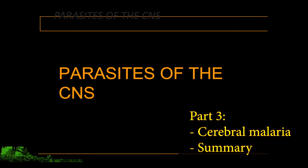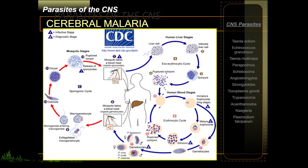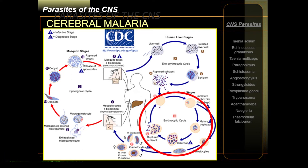This lecture is about the parasites of the central nervous system. The last parasite we will be discussing is Plasmodium falciparum and how it infects the central nervous system — specifically, we go into the realm of cerebral malaria. Before we go there, we have to review the complicated life cycle of Plasmodium in general. Please remember that cerebral malaria is only caused by Plasmodium falciparum, and after this lecture you should understand why only P. falciparum and not the other Plasmodium species.